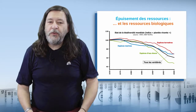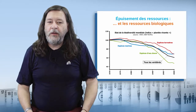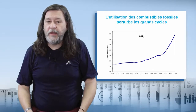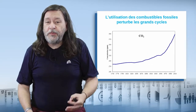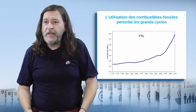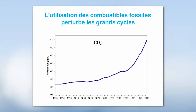The use of these resources is going to lead to new disturbances of major cycles, particularly the combustion of fossil fuels, which produces large amounts of CO2 in the atmosphere. This CO2, which is an inert gas, accumulates in the atmosphere. You can see on this graph the evolution of CO2 over time — we have now reached more than 400 parts per million of CO2 in the atmosphere.